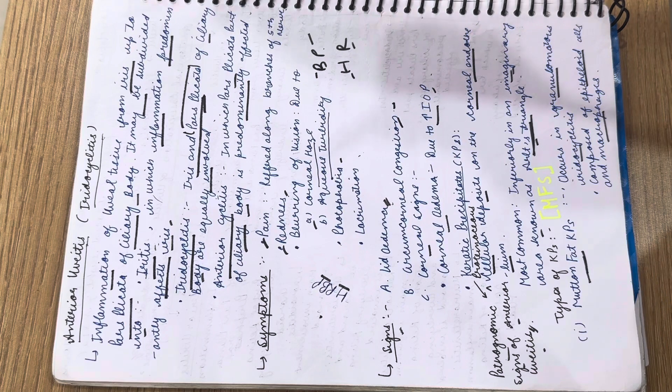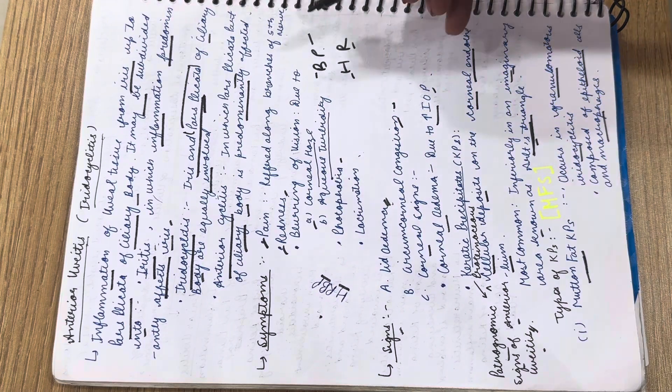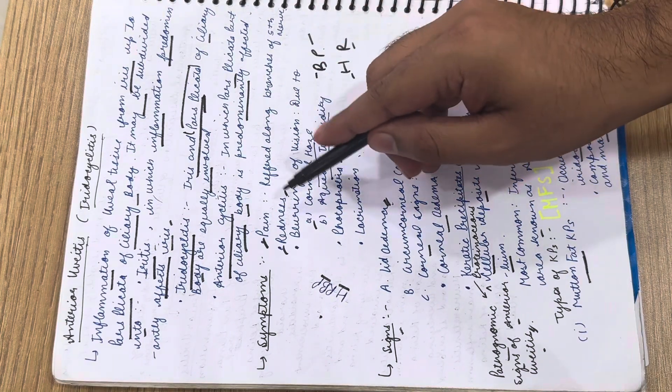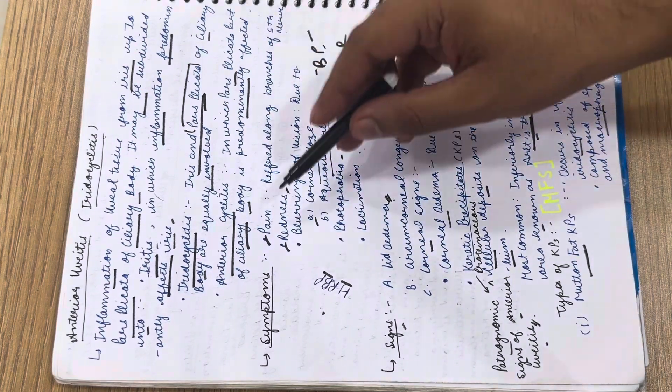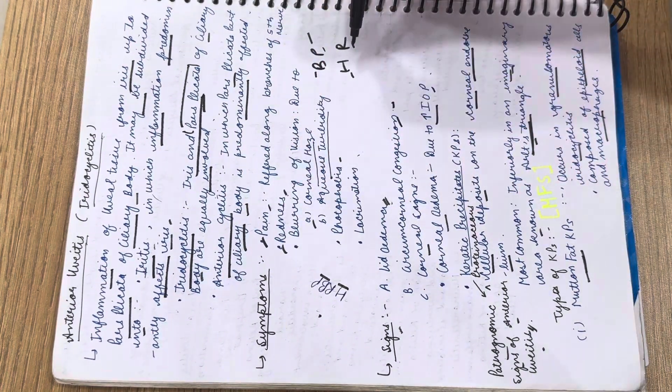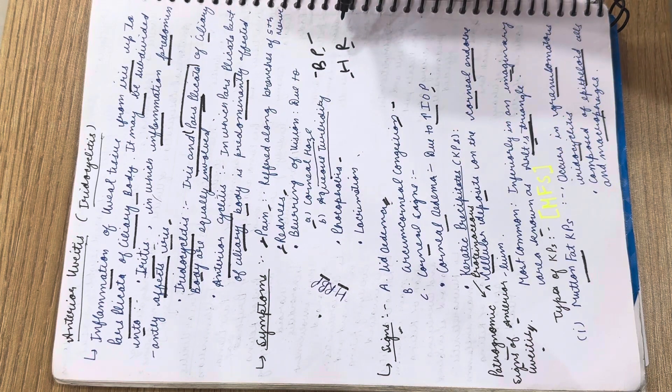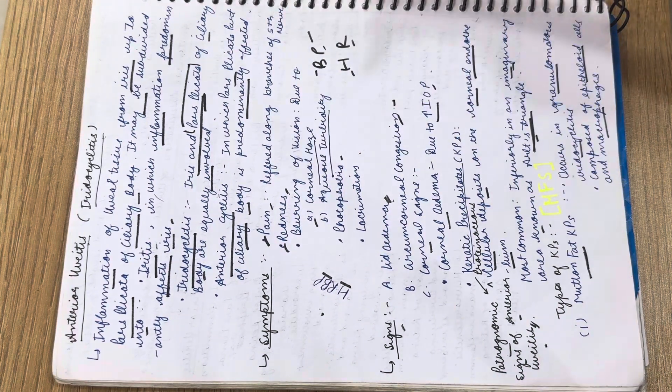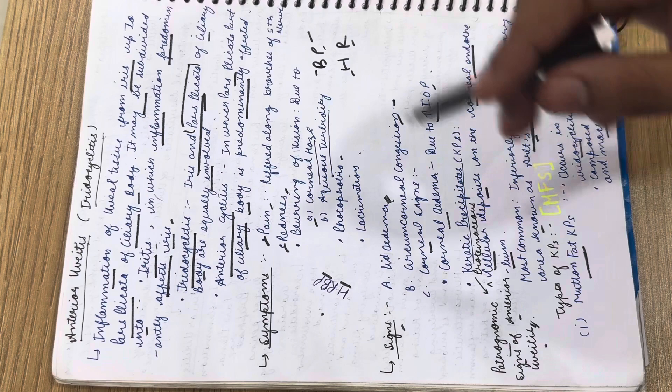The symptoms can be remembered by BP from HR. B stands for blurred vision, P stands for pain and photophobia, H stands for corneal haze, and R stands for redness.